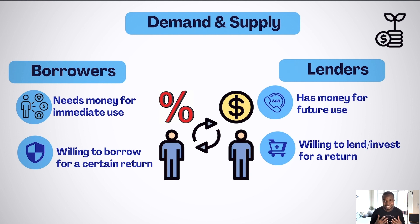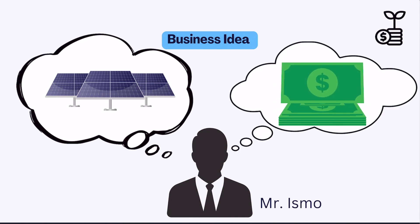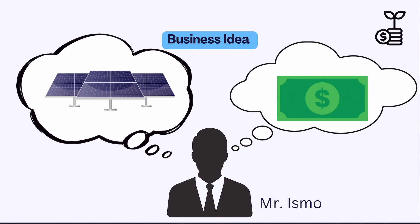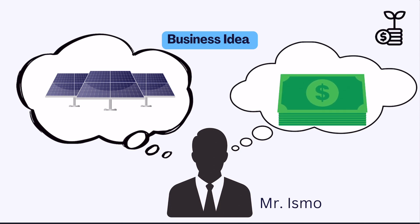To understand this better, let's see a practical example. Suppose Mr. Ismo, who is an environmentalist, wants to start a company to produce solar panels. The first thing he did was to determine how much money he needed to run his factory for one year, and this is what he came up with.